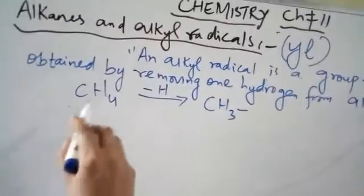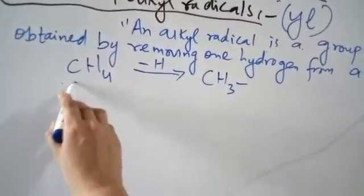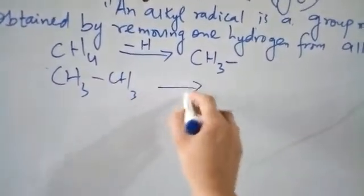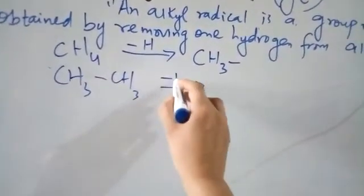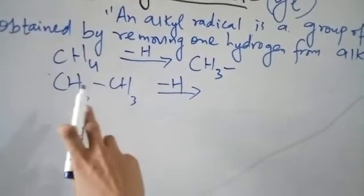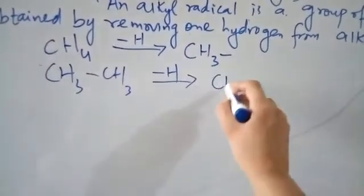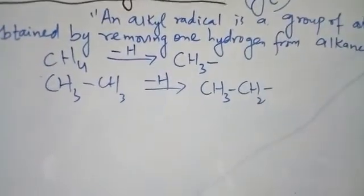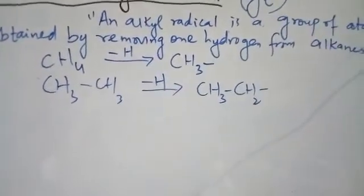Similarly, if we have ethane — the molecular formula for ethane is C2H6. We can also write it in condensed form. When we remove one hydrogen from ethane, it will convert into an ethyl radical.